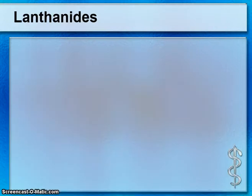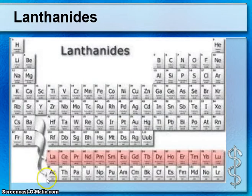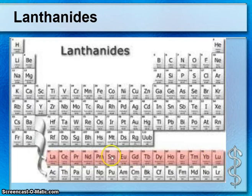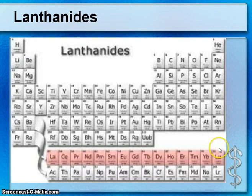The lanthanides are found near the bottom of the chart — they actually belong in Group 3 but are placed at the bottom. These are also known as the rare earth elements because they're rarely found on Earth. They're extremely important with new technologies.